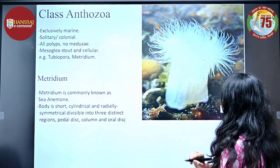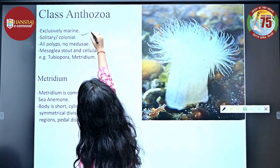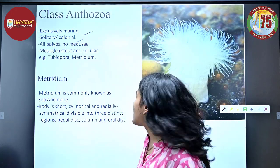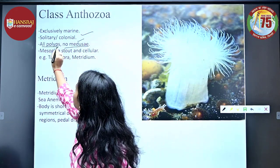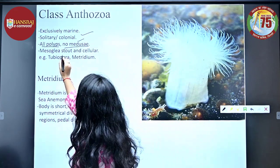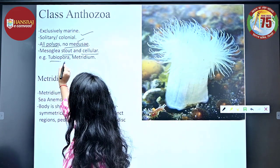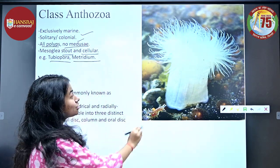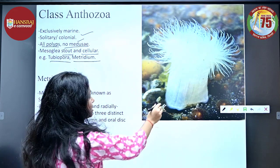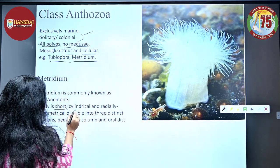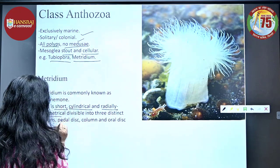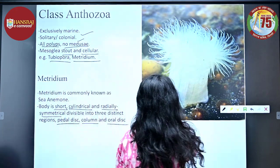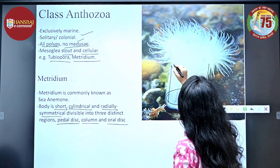Class Anthozoa: members are exclusively marine, either solitary or colonial, and there are only polyp stages — no medusa stages at all. Their mesoglea is stout and cellular. Examples are Tubipora and Metridium. Metridium is also known as sea anemone, with a short, cylindrical, radially symmetrical body divisible into three distinct regions: pedal disc, column, and oral disc.